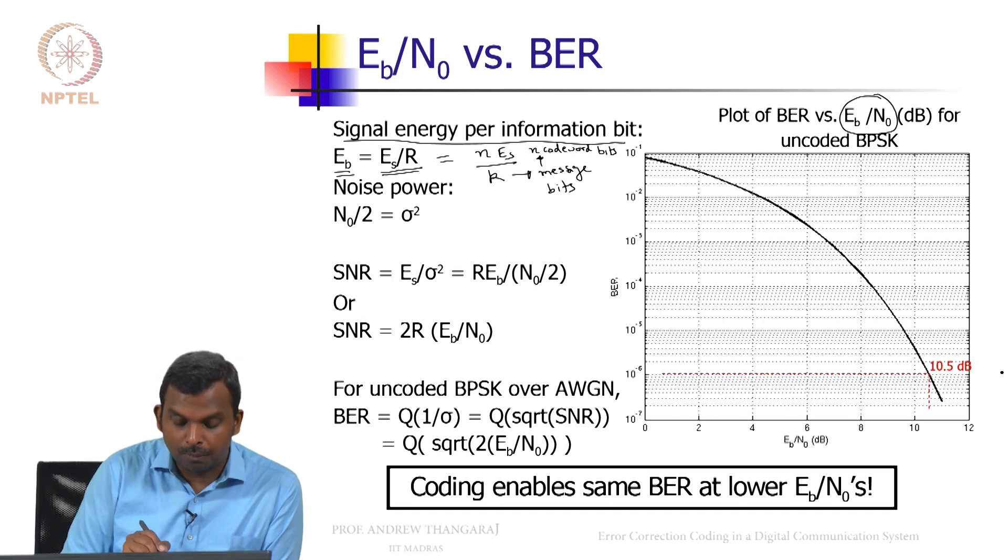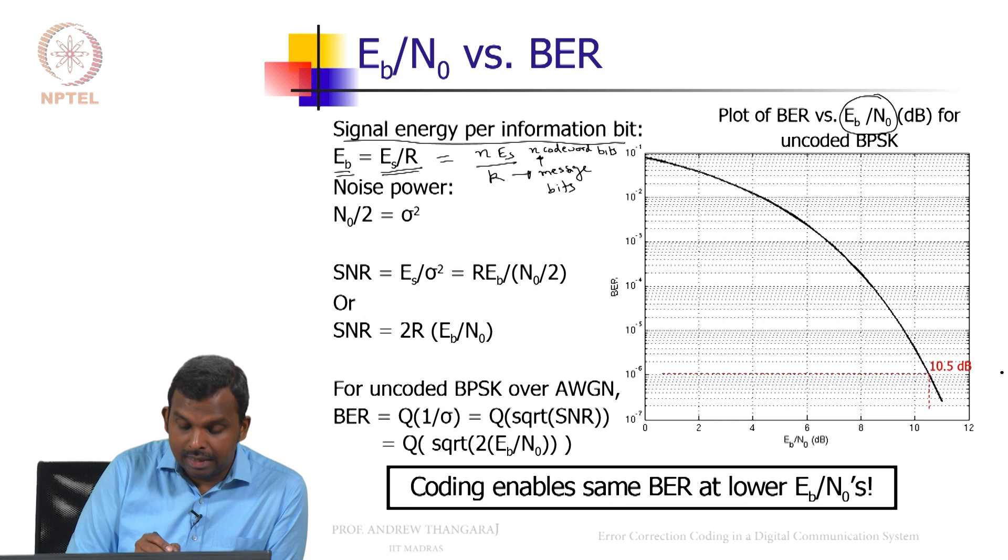The noise power remains the same. N0 by 2 is sigma square. So SNR is Es by sigma square, one can write it in terms of Eb and N0.